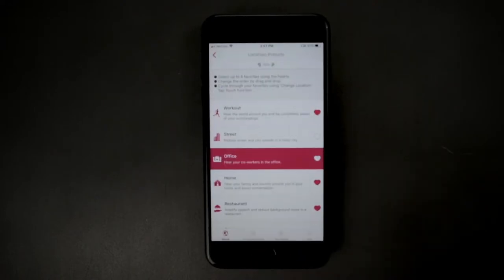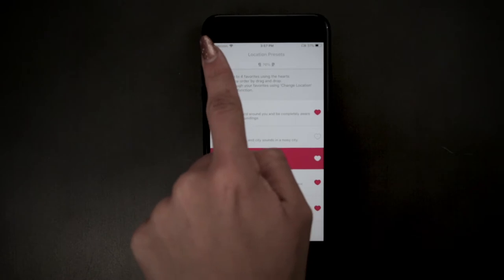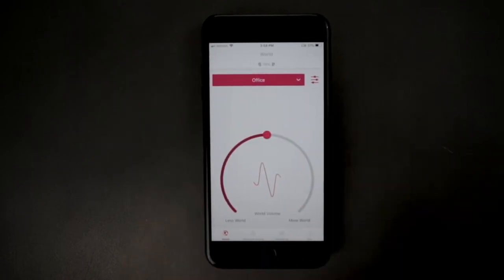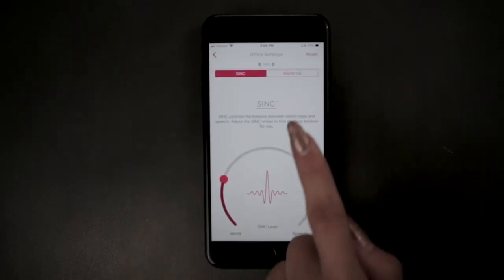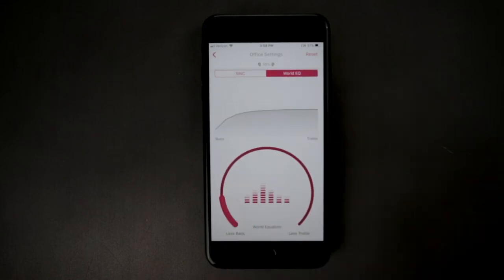You can return to the home screen by clicking here. You can tap the settings icon in order to access the sync and world EQ screens to further customize each location preset.